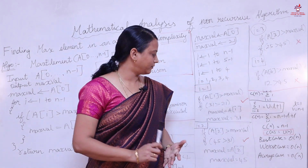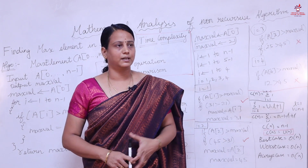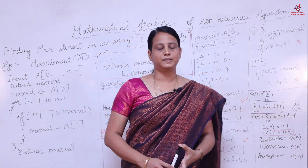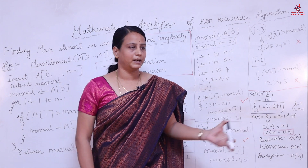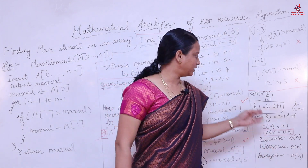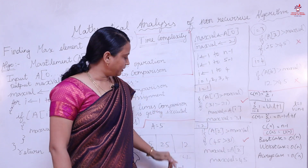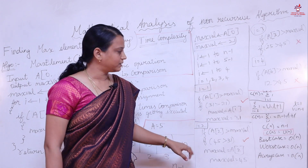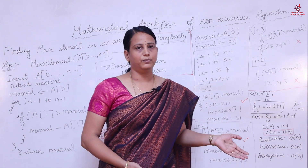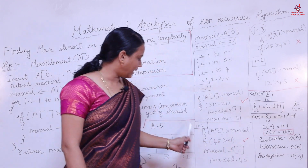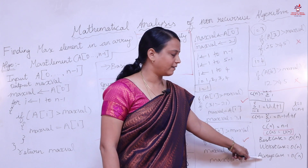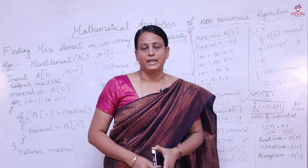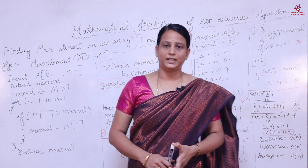For every algorithm we need to find the best case, worst case, and average case. In some algorithms these may differ, but here they do not change significantly. Since we don't know where exactly the maximum value is located, we must traverse the entire array. Therefore, the best case, worst case, and average case are all O(n). This concludes the mathematical analysis of a non-recursive algorithm. Thank you, class.